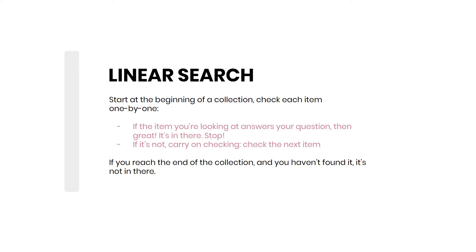To summarize: whenever you think of searching one by one, you're talking about a linear search. Here's a more detailed algorithmic breakdown — you start at the beginning of a collection and check each item one by one. If the item answers your question, you stop — you found it. If not, carry on to the next. If you reach the end of the collection without finding what you're looking for, it's not in there. That's how simple the linear search algorithm is.